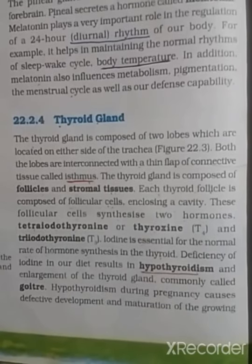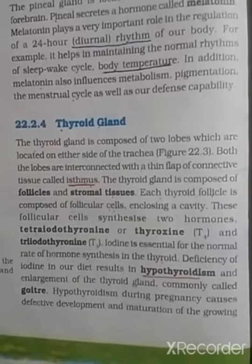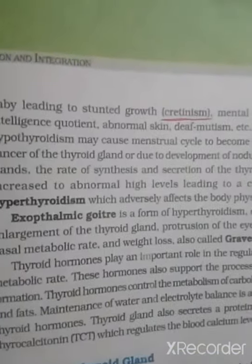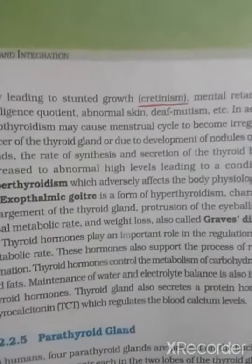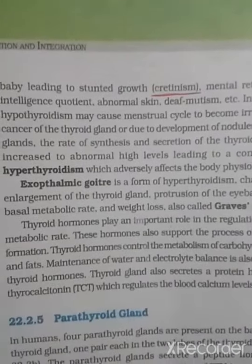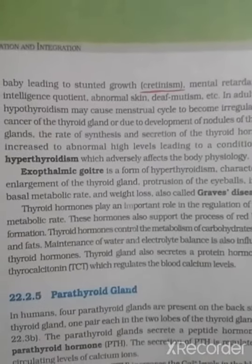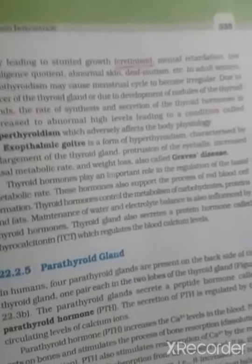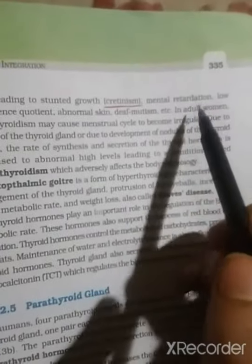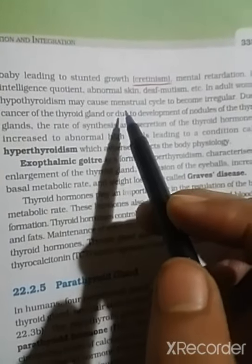Hypothyroidism during pregnancy causes defective development and maturation of the growing baby, leading to stunted growth — known as cretinism. Hyposecretion of thyroid hormone in children causes cretinism, while in adults it causes myxedema. In adults, hypothyroidism may also cause the menstrual cycle to become irregular.